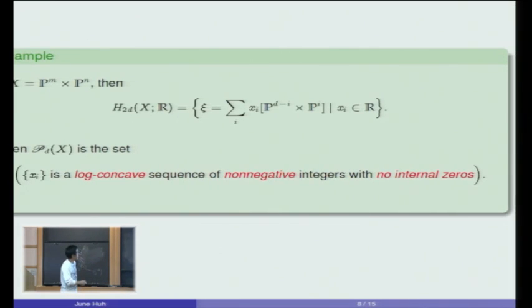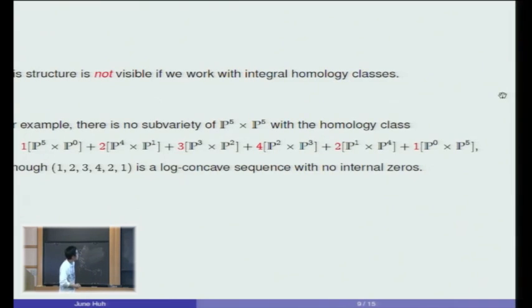That was a clean answer, but I should point out that this clean structure is not visible if you work with integral homology classes. If you look at the middle homology of P^5 × P^5, and you look at the homology class corresponding to the sequence 1, 2, 3, 4, 2, 1, then it's log-concave, non-negative, no internal zeros. But there is no five-dimensional subvariety of P^5 × P^5 with that as a homology class. It turns out that 48 times this homology class is the class of a subvariety, but after many hard works, you can show that there is no five-dimensional subvariety having that as a homology class.